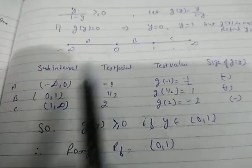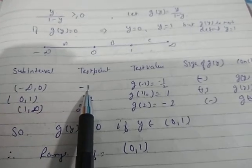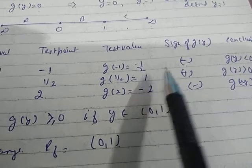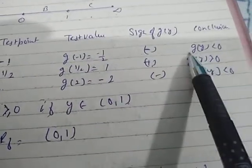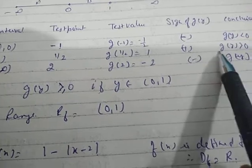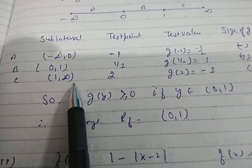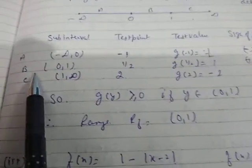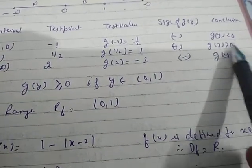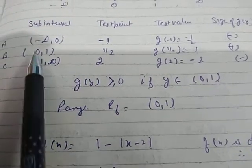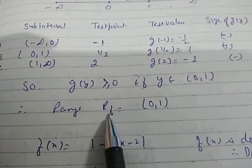Testing each interval: for A, using test point -1 gives g(-1) = -1/(1-(-1)) = -1/2, which is negative. For B, using test point 1/2 gives a positive value, so g(y) > 0. For C, using test point 2 gives a negative value. So the valid interval is B, where g(y) ≥ 0 for y in [0, 1). Therefore, the range is [0, 1), noting that 1 is not included.